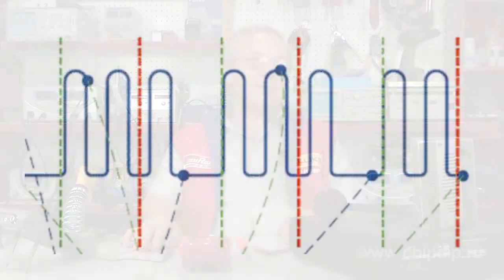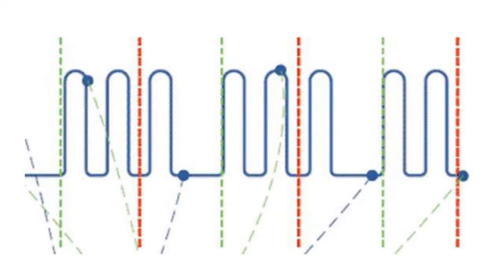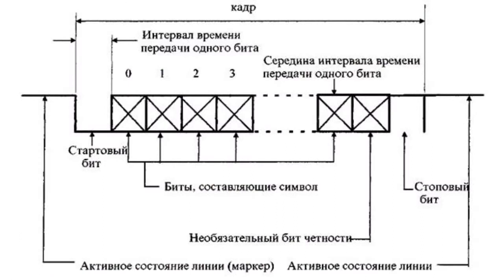It all depends on the way of data bit transfer. In a serial input, data goes bit by bit through the same channel. Having passed through the port, bits form lines and thus data units of such length which corresponds to the length of the device's computer word.